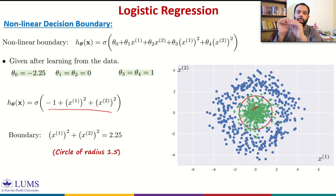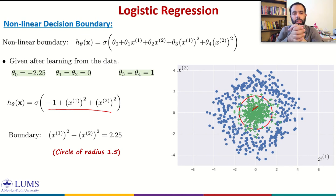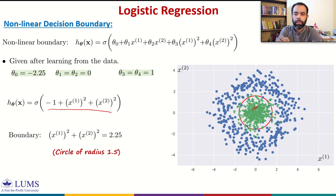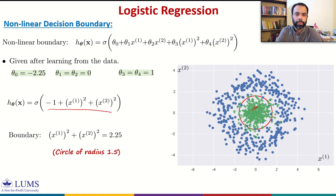In general, logistic regression has a linear decision boundary due to the inherent model in which theta transpose X equals 0. But if we manipulate features before passing them to the logistic regression model, we can have non-linear boundaries. That was all about decision boundary for logistic regression. In the next video, we will talk about and define the loss function for logistic regression classification.